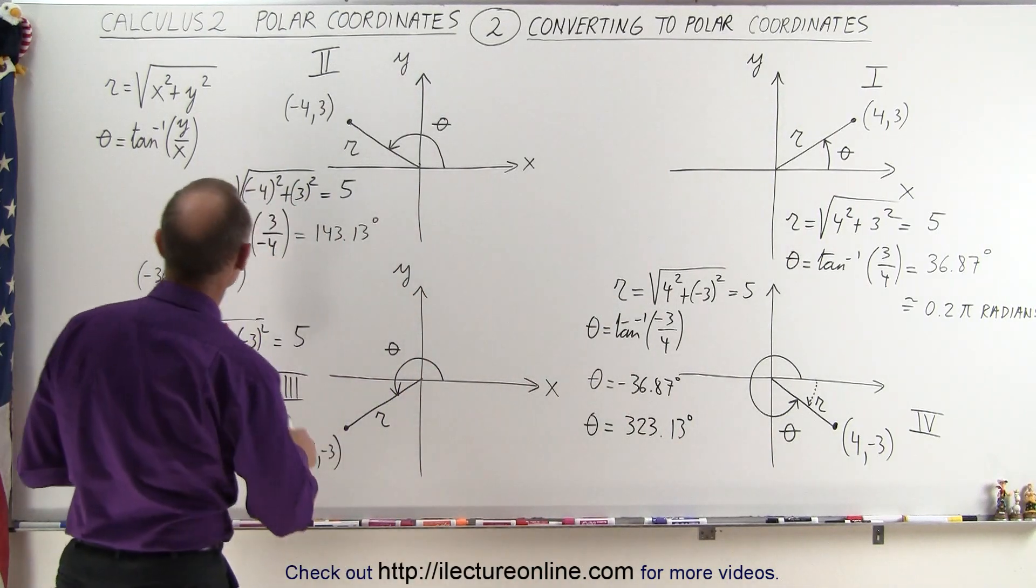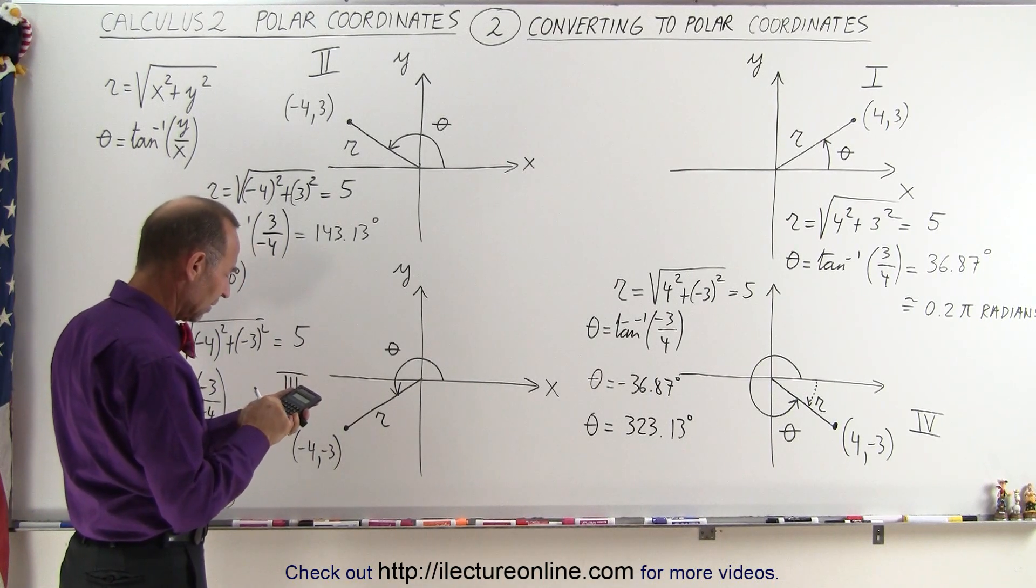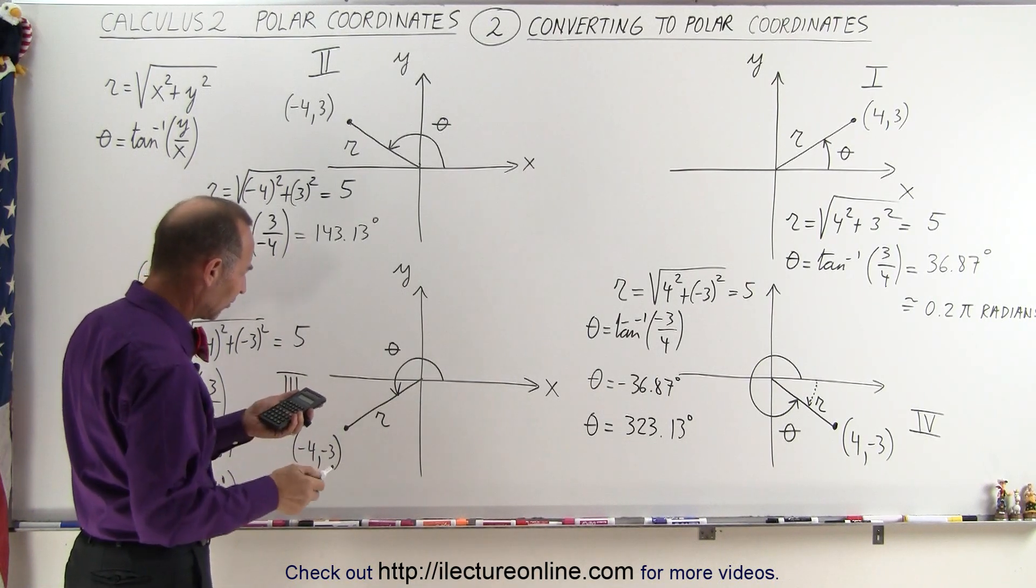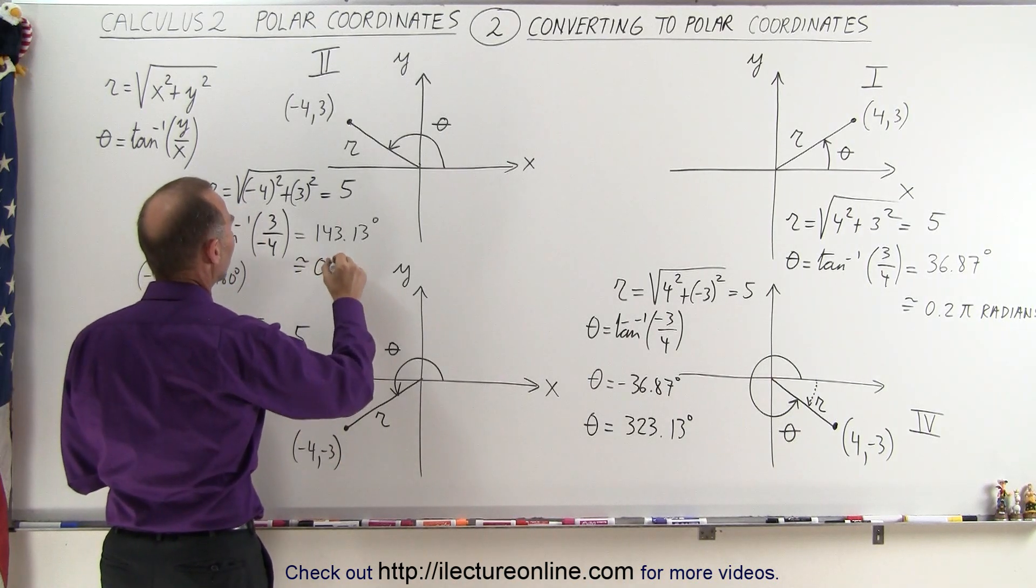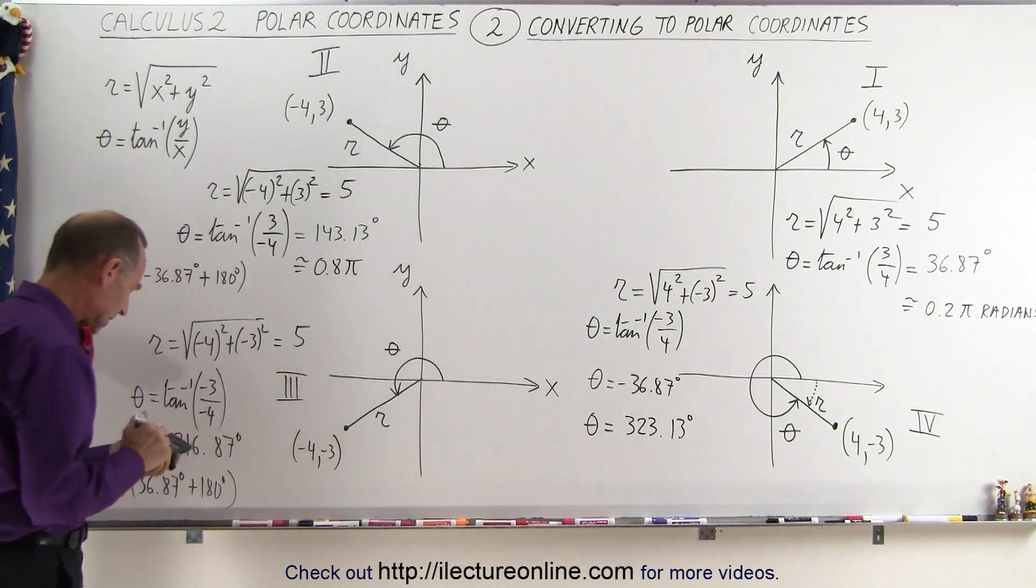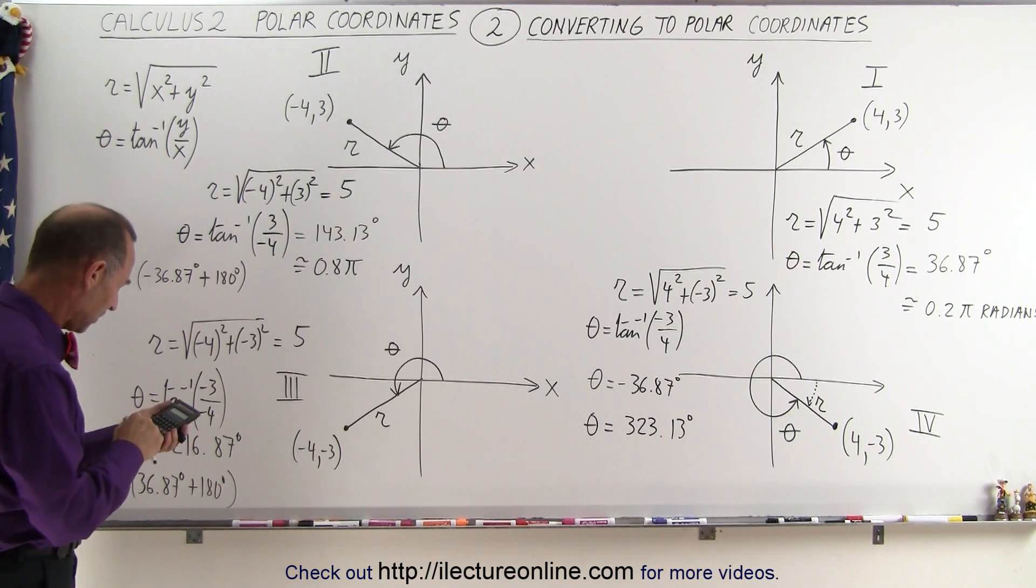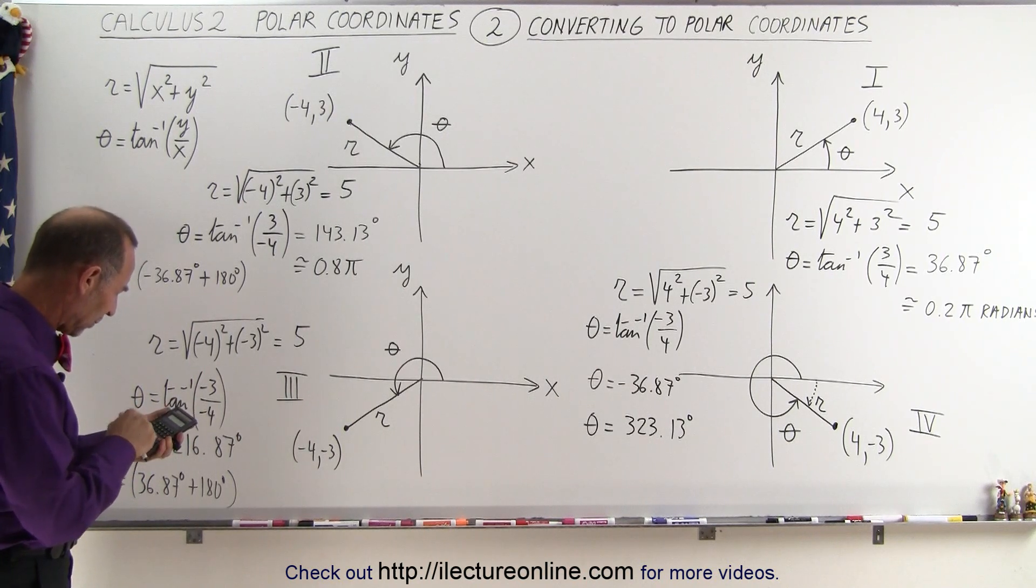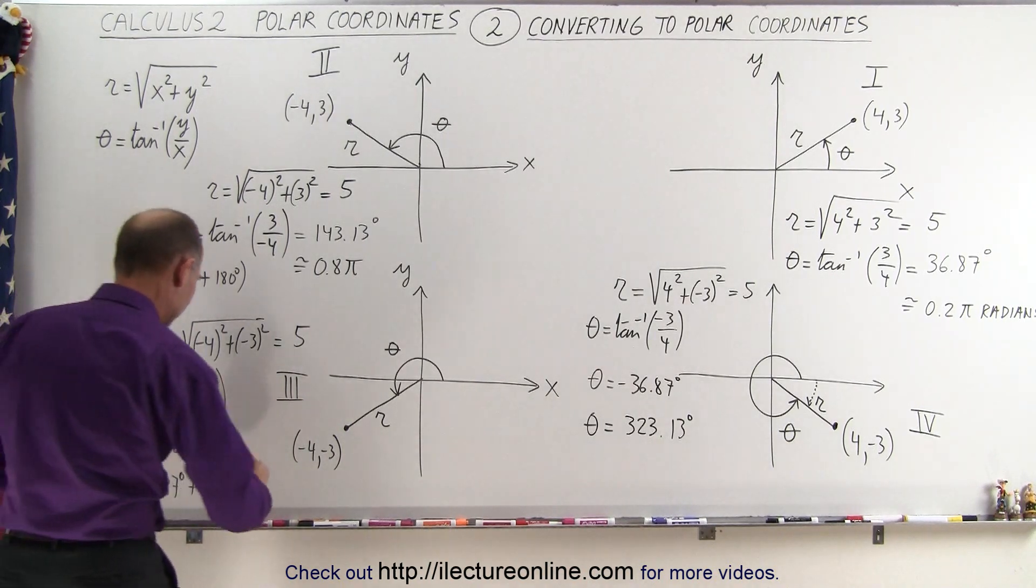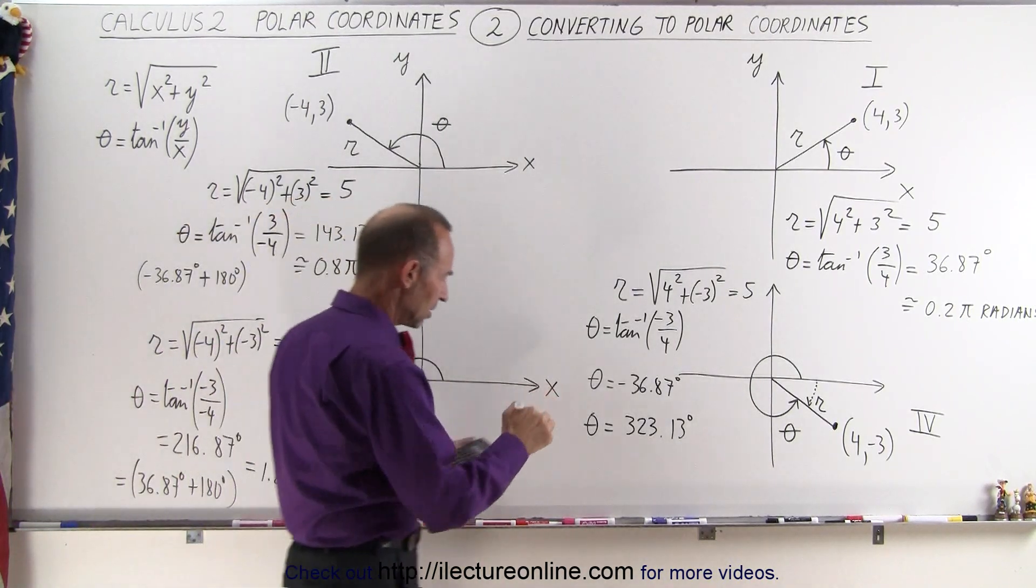If we want to convert those to radians, of course, we can take 143.13 degrees, divide by 180, and that gives us about equal to 0.8 pi radians. Over here, when we take the angle 216.87 and divide by 180, that's equal to 1.2 pi radians.